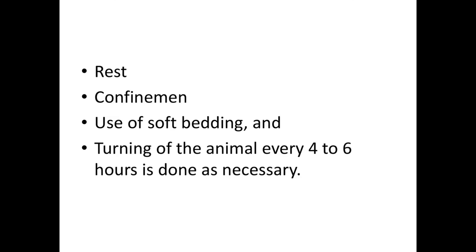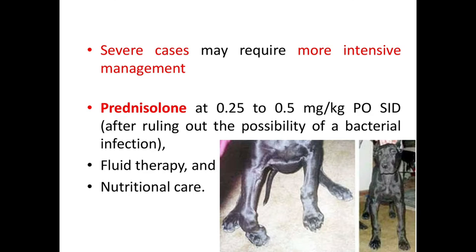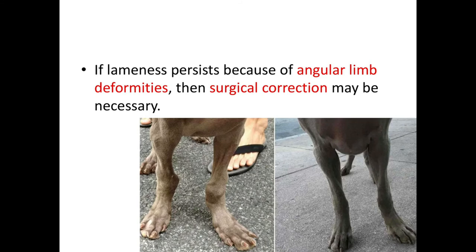Rest, confinement, and use of soft bedding are recommended, along with turning the animal every four to six hours as necessary. Severe cases may require more intensive management with prednisolone at 0.25 to 0.5 mg/kg after ruling out the possibility of a bacterial infection. Fluid therapy and nutritional care should be given as needed. If lameness persists due to angular limb deformities, surgical correction may be necessary.